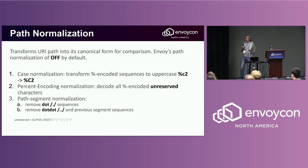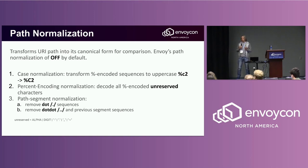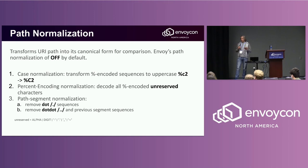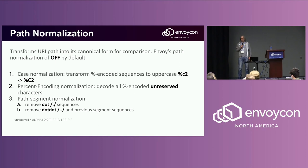This is where path normalization comes in. It's a transformation that determines the canonical form of the path, which intermediaries like Envoy use to compare paths for equivalence — very important when you want to find a policy or a service that corresponds to your specific path.